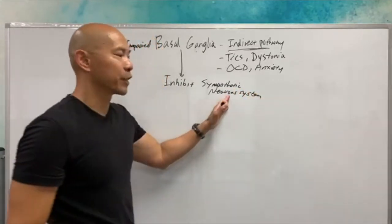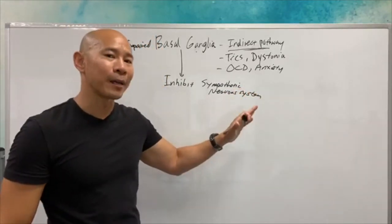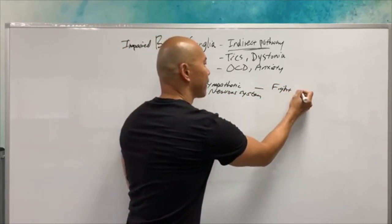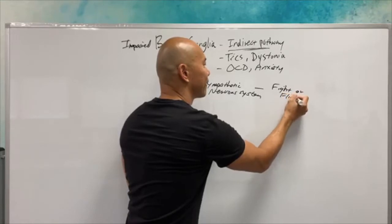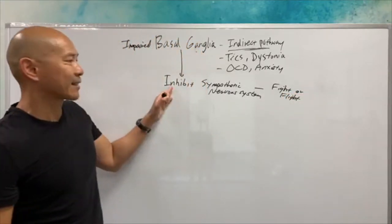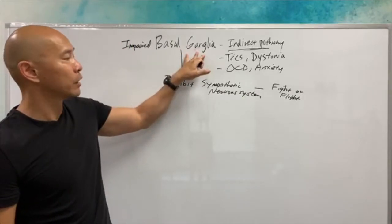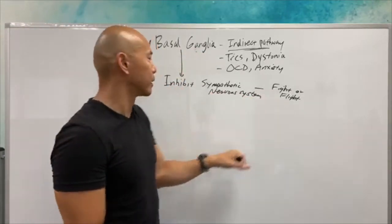And this is the part of the nervous system that controls everything that's on autopilot, but that's pushing you toward fight or flight. So this acts as a brake on your fight or flight system. If you lose basal ganglionic function, you're going to lose the brake pedal on the fight or flight system.